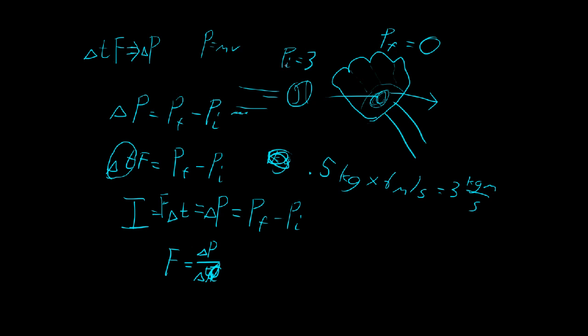basically its initial momentum we figured out was 3 because we multiplied the mass times the velocity. That was 3. And then we said that when you bring it to a stop, the velocity is zero, so the momentum is zero.